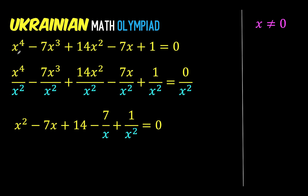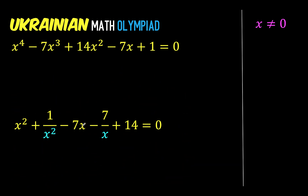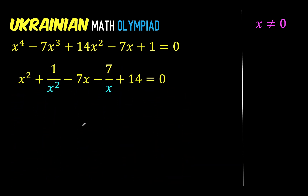We have more tools for solving quadratic equations, like the factoring method and the quadratic formula. So, the direction of our solution is to convert this 4th degree equation into a quadratic equation using variable substitution. Let's rearrange the terms so that those with x squared are together and those with variable x are also together. Notice also that there is a common factor of 7.